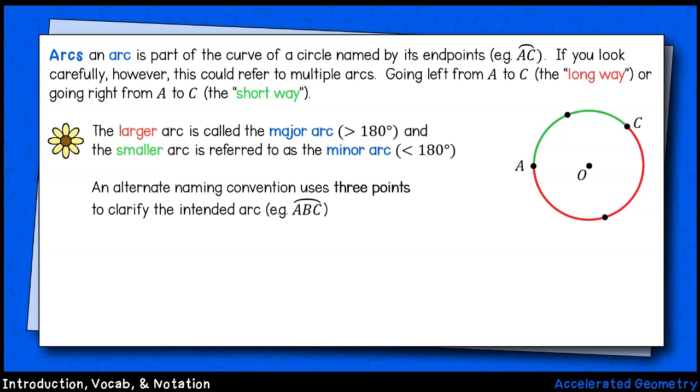You may wish to use more specific notation here to reference arc AC, depending on whether you are referring to the major or minor arc. In this case, go with three-point notation to make things more clear. Let's add point B to the green path. Now, arc ABC unambiguously refers to the minor arc.